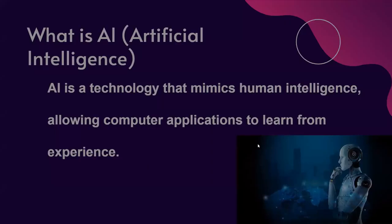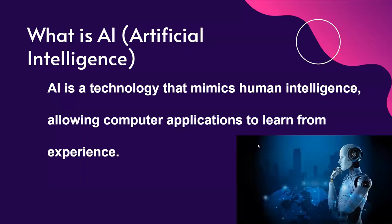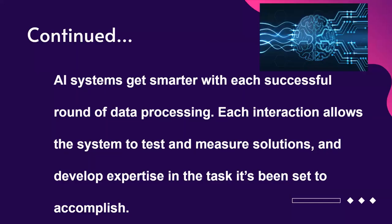What is AI? AI, or artificial intelligence, is a technology that mimics human intelligence, allowing computer applications to learn from experiences. AI systems get smarter with each successful round of data processing. Each interaction allows the system to test and measure solutions and develop expertise in a task it's been set to accomplish.